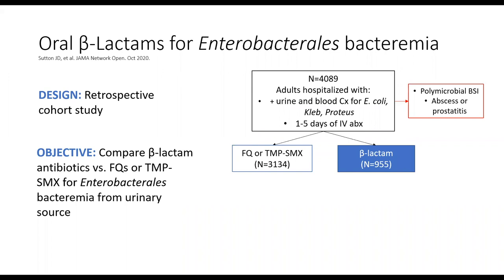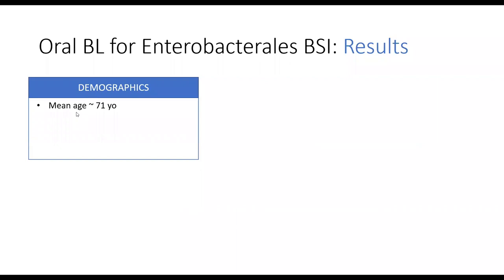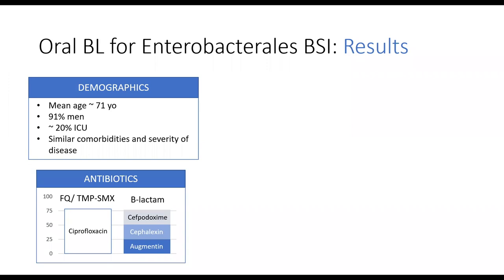They separated this group into two cohorts: those who received fluoroquinolones and bactrim, and those who received a beta-lactam. On average, patients were older with a mean age of 71, overwhelmingly men. About 17% were initially admitted to the ICU, but had relatively similar comorbidities and severity of disease. In the fluoroquinolone and bactrim group, 78% received ciprofloxacin. Within the beta-lactam group, about 25% each received cefadroxil, cefalexin, and augmentin, respectively.